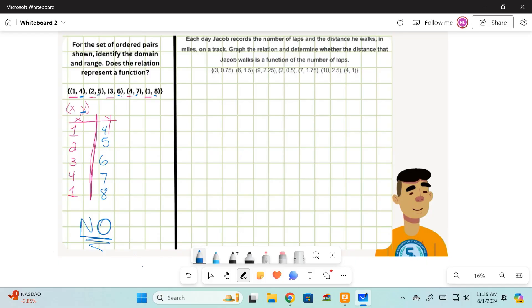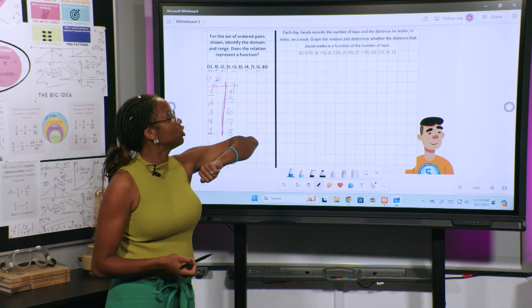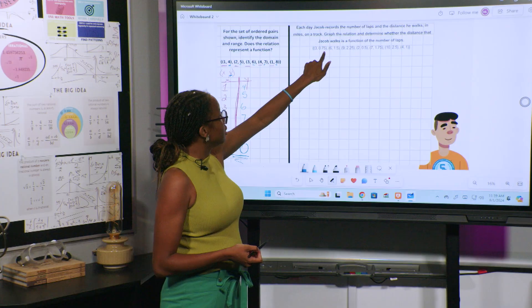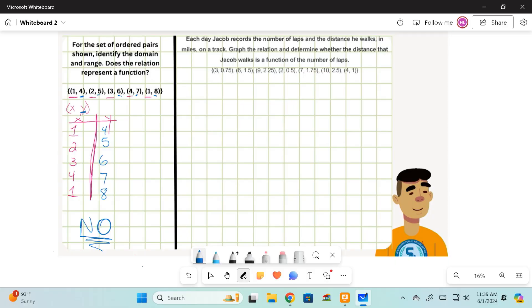Moving on to the next one. Each day, Jacob records the number of laps and distance he walks in miles on a track. Graph the relation and determine whether the distance that Jake walks is a function of the number of laps. So we can look at it to see if it's going to be a function because of the ordered pairs we have, and we can also graph it as well. I'm going to look at my x's and my y's. This is an x and this is a y, and I'm going to do that for all of them.